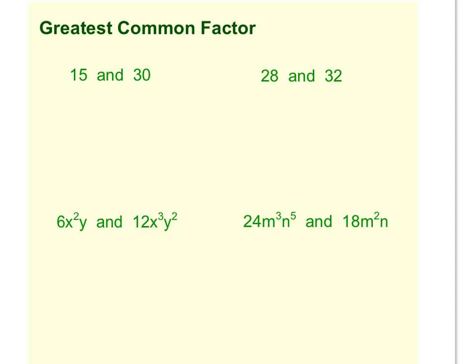One way to find the greatest common factor is to list all your factors. So I'll just do one that way. We have 15. Our factors, we have 1 and 15, 3 and 5, and that's about all that fits into 15.